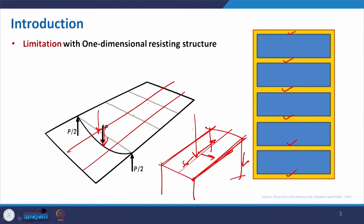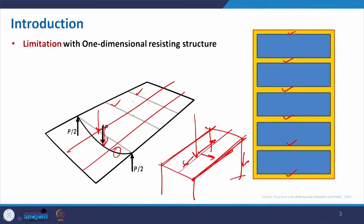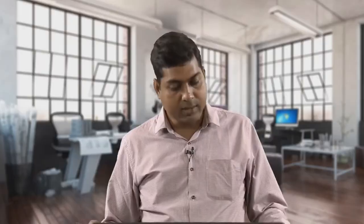The limitation with one-dimensional arrangement: if you again see that they have parallel members — the black color beams giving support to the upper slab — due to a point load, the deflection on that particular member is much greater, with considerably less effect on the others. Whereas if we make the grid, the load can be distributed more efficiently.